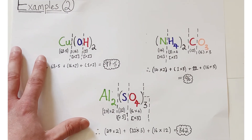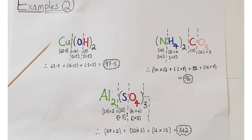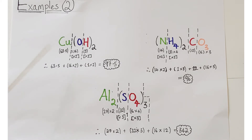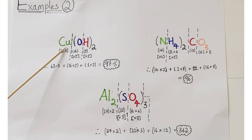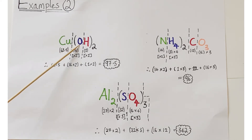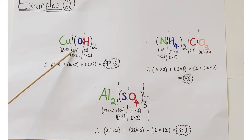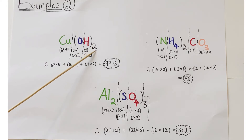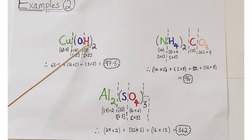Some more advanced examples involve the use of brackets. Starting with copper hydroxide, Cu(OH)₂: the oxygen and hydrogen of the hydroxide ion are found within the brackets, and the subscript number outside multiplies all atoms inside the bracket. Copper is outside with no number, so that's one copper at 63.5. Oxygen is inside: 16 × 2 for two oxygens. Hydrogen is inside: 1 × 2 for two hydrogens. Total: 63.5 + (16 × 2) + (1 × 2) = 97.5.